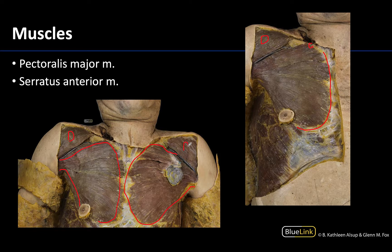Extending into the inferior region, you can see these really nice sawtooth fibers associated with the serratus anterior. We'll only see a little bit of the serratus anterior in this particular dissection, but it has a very dominant, very characteristic sawtooth appearance. It'll be just inferior and lateral to the pectoralis major.